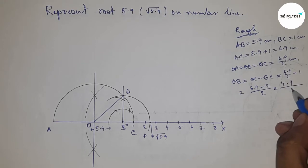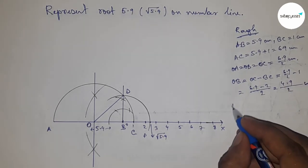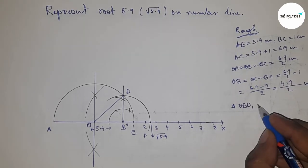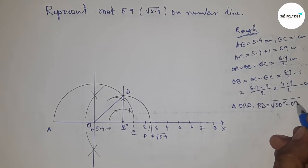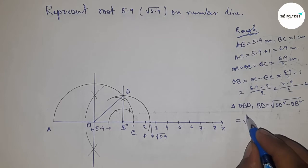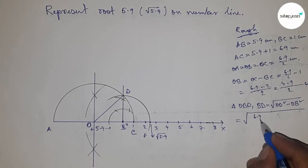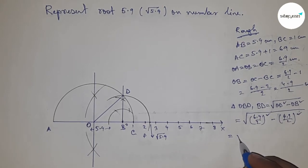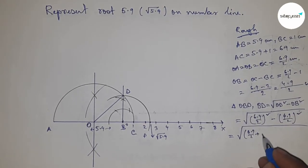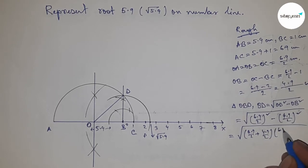In the right angle triangle OBD, we can write by Pythagorean theorem: BD equals root over OD square minus OB square. Putting the values of OD and OB, and applying the formula a squared minus b squared equals a plus b times a minus b.